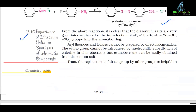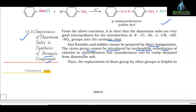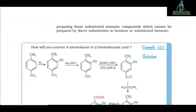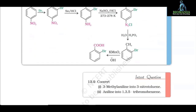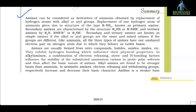13.10 Importance of Diazonium Salts in Synthesis of Aromatic Compounds. Diazonium salts are very good intermediates for the introduction of fluoride, chloride, bromide, iodide, cyanide, -OH and -NO2 groups into the aromatic ring. Aryl fluorides and iodides cannot be prepared by direct halogenation. The cyano group cannot be introduced by nucleophilic substitution of chlorine in chlorobenzene, but cyanobenzene can be easily obtained from a diazonium salt. Thus, the replacement of diazonium by other groups is helpful in preparing substituted aromatic compounds that cannot be prepared by direct substitution.